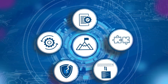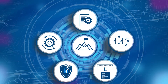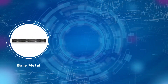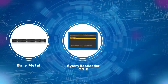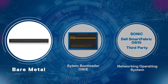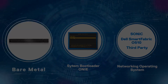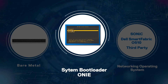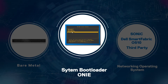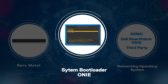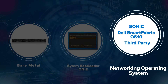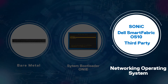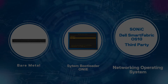So how does BMP work? It consists of three components: Bare Metal hardware BIOS with POST, the system bootloader, and the network operating system. Bare Metal is the hardware, and the system bootloader is an ONIE that loads and starts the boot-time task of a network operating system into working memory. The network operating system is the software component that acts as an interface between the Dell switch hardware components and the end user.